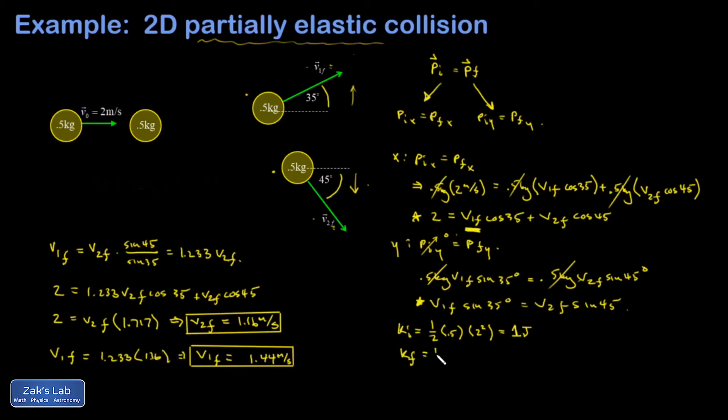In the final state, two things are moving. I have one half times 0.5 times 1.16 squared plus one half times 0.5 times 1.44 squared. And that gives me 0.855 joules. So a little bit of energy has been lost.